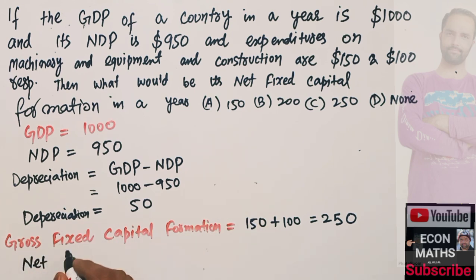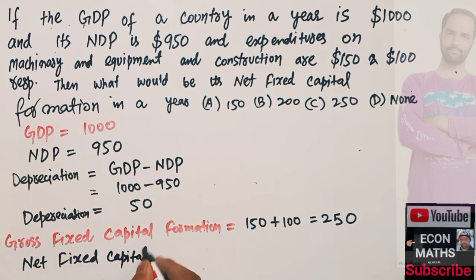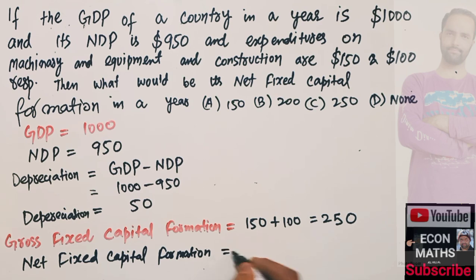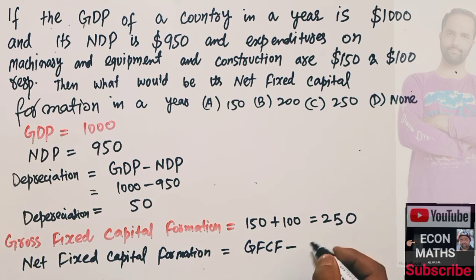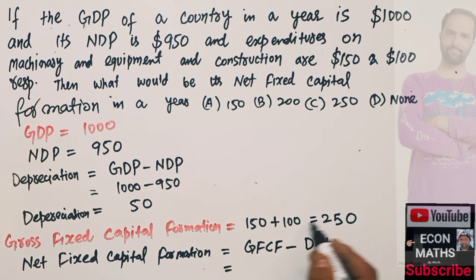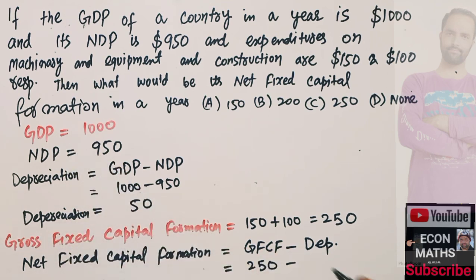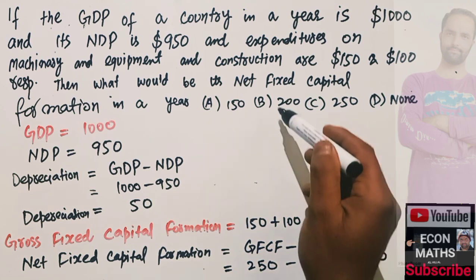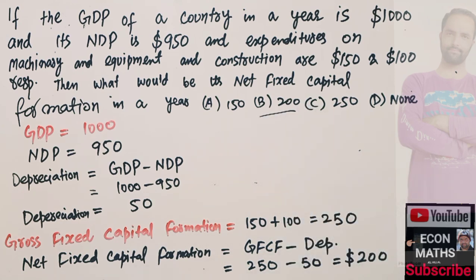Now we need to find our net fixed capital formation, which is simply equal to gross fixed capital formation minus depreciation. Our gross fixed capital formation is $250, and subtracting the depreciation of $50 gives us $200 as net fixed capital formation. The correct option is $200. I hope I made myself clear in this video — thank you.